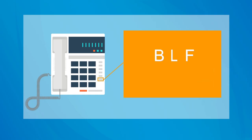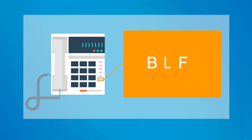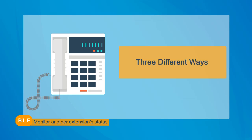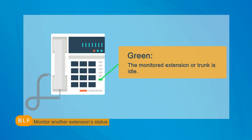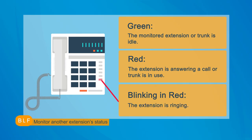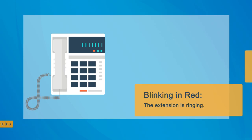Let's take some time to figure out the BLF feature. Busy Lamp Field is a light on an IP phone that tells you whether another extension or trunk connected to the same PBX is busy or not. The light will usually display in three different ways: if it's static green, it means the monitored extension or trunk is idle; if it's static red, it means the extension is on a call or trunk is in use; if it's blinking red, it means the extension is ringing. The actual status displayed may vary depending on the type of your IP phone.